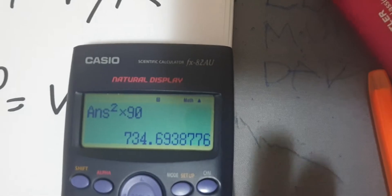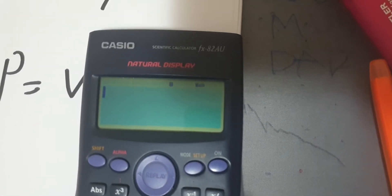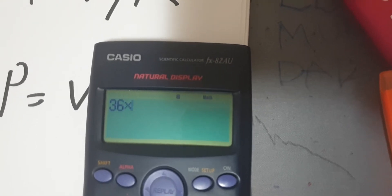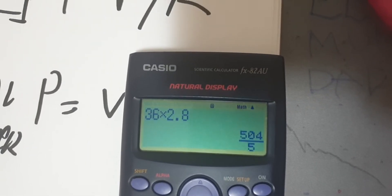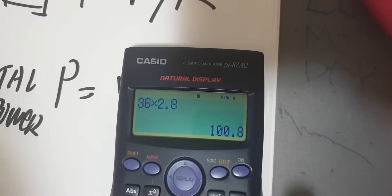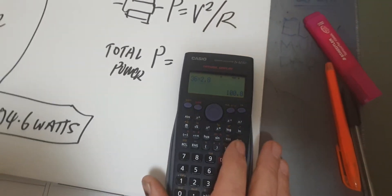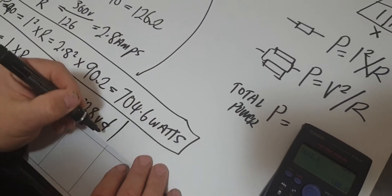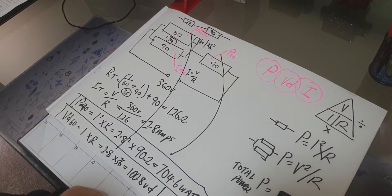On the calculator: 36 times 2.8 — done that back to front but it still works out — and we get 100.8. So the voltage drop across the parallel combination is 100.8 volts.